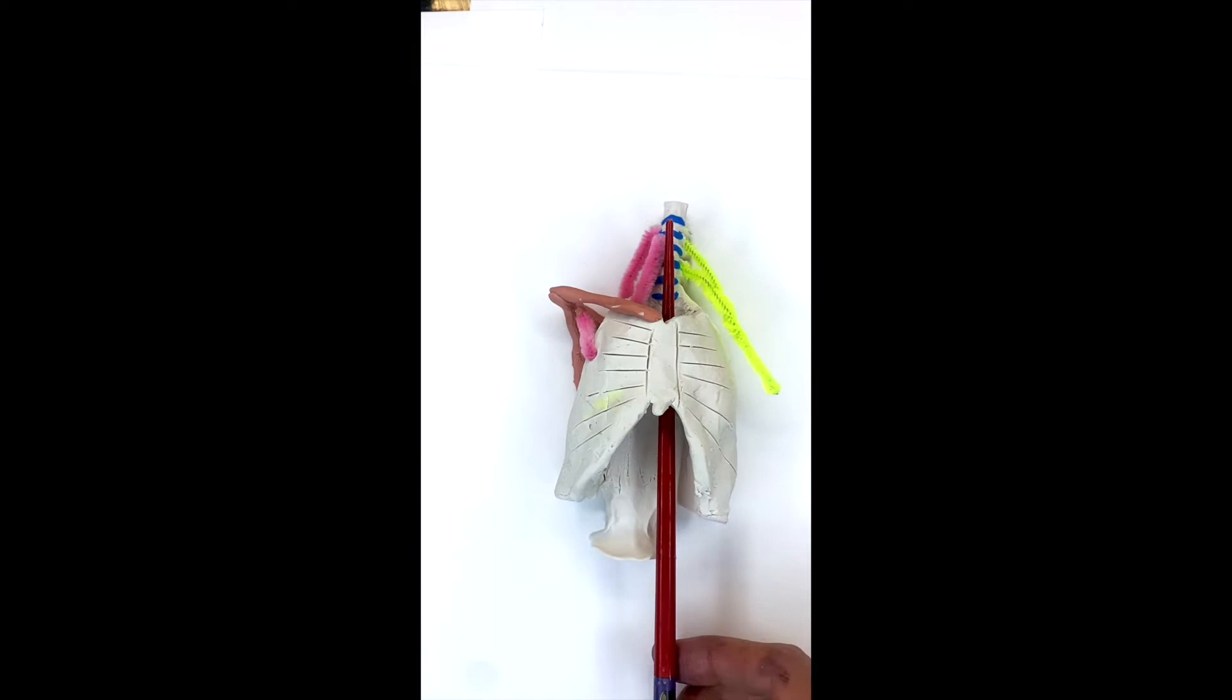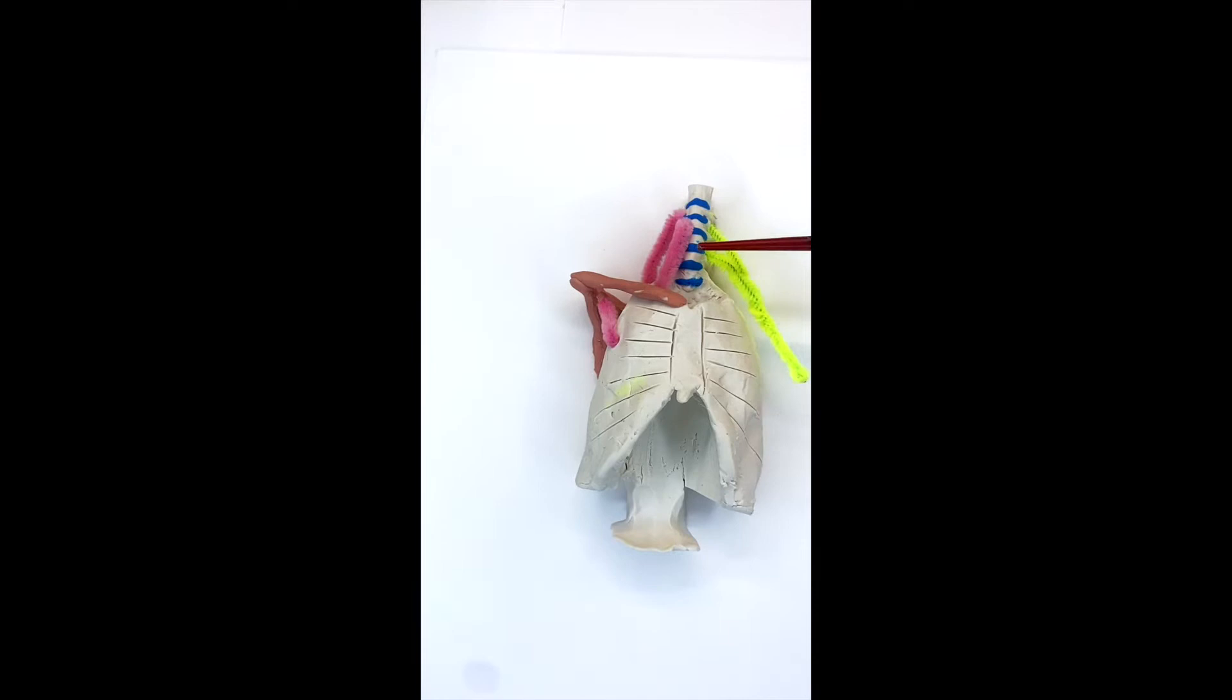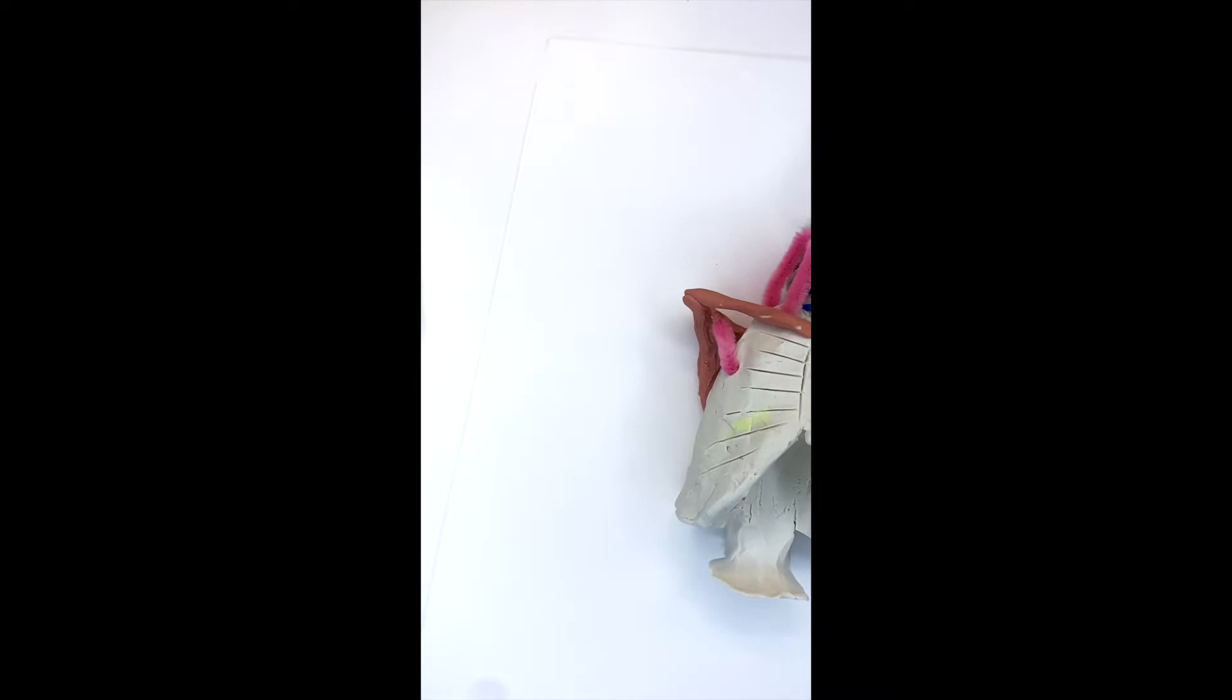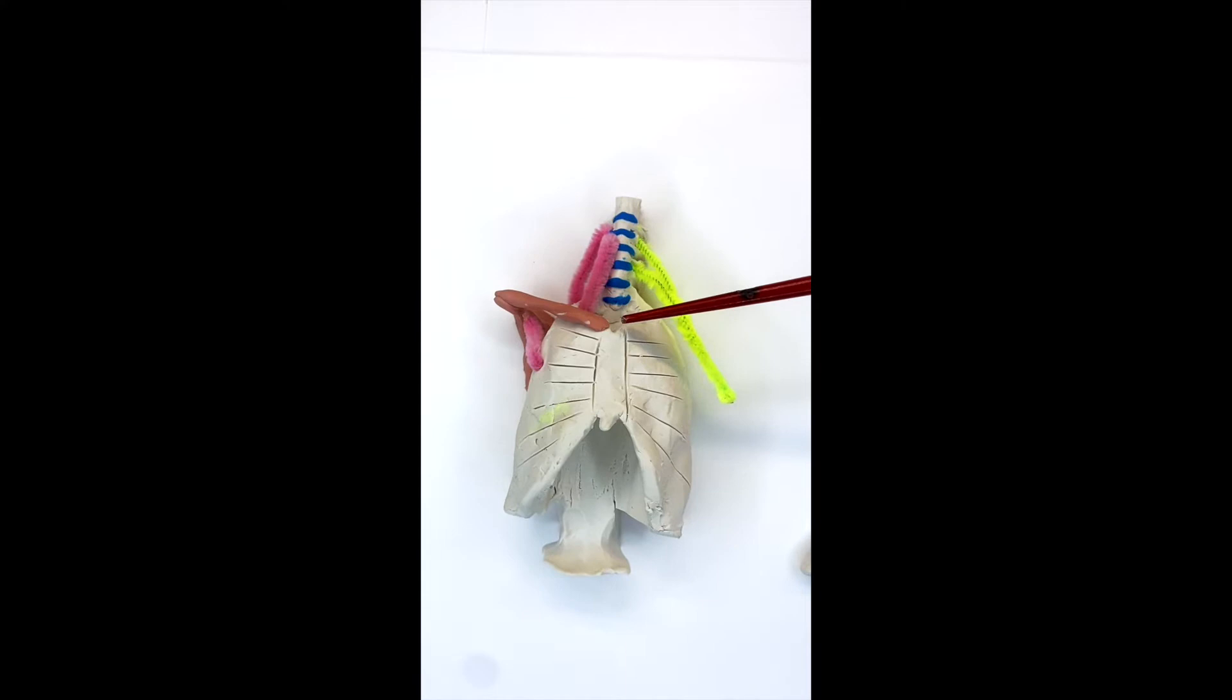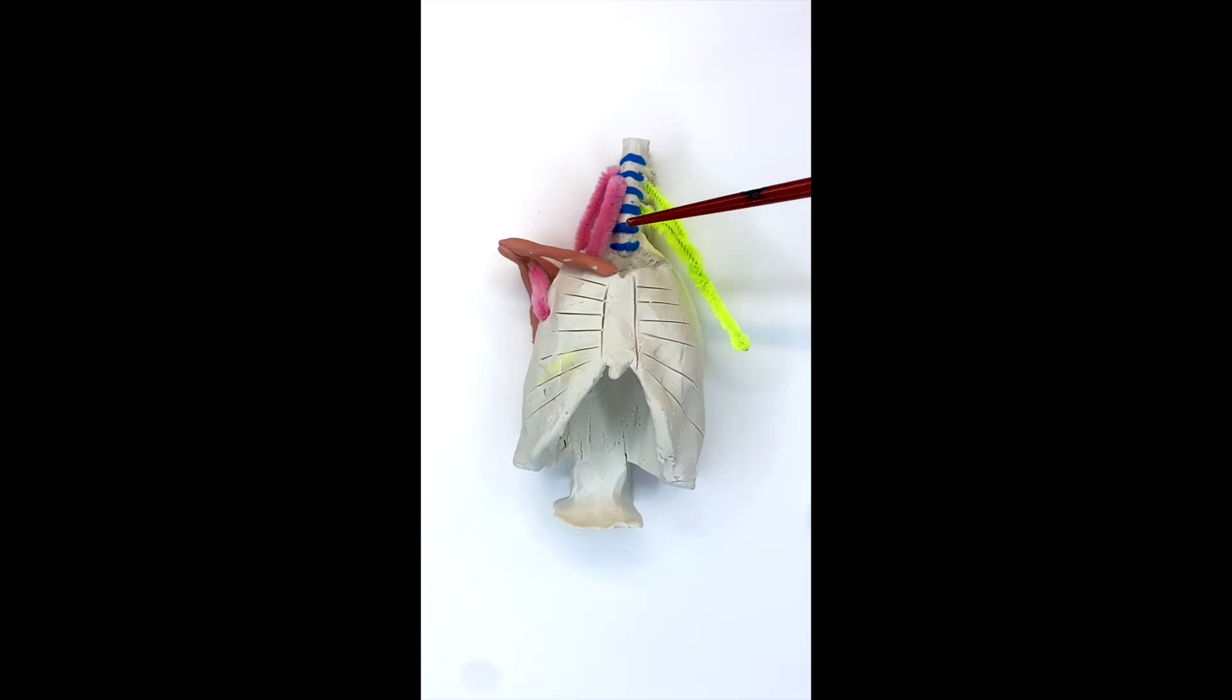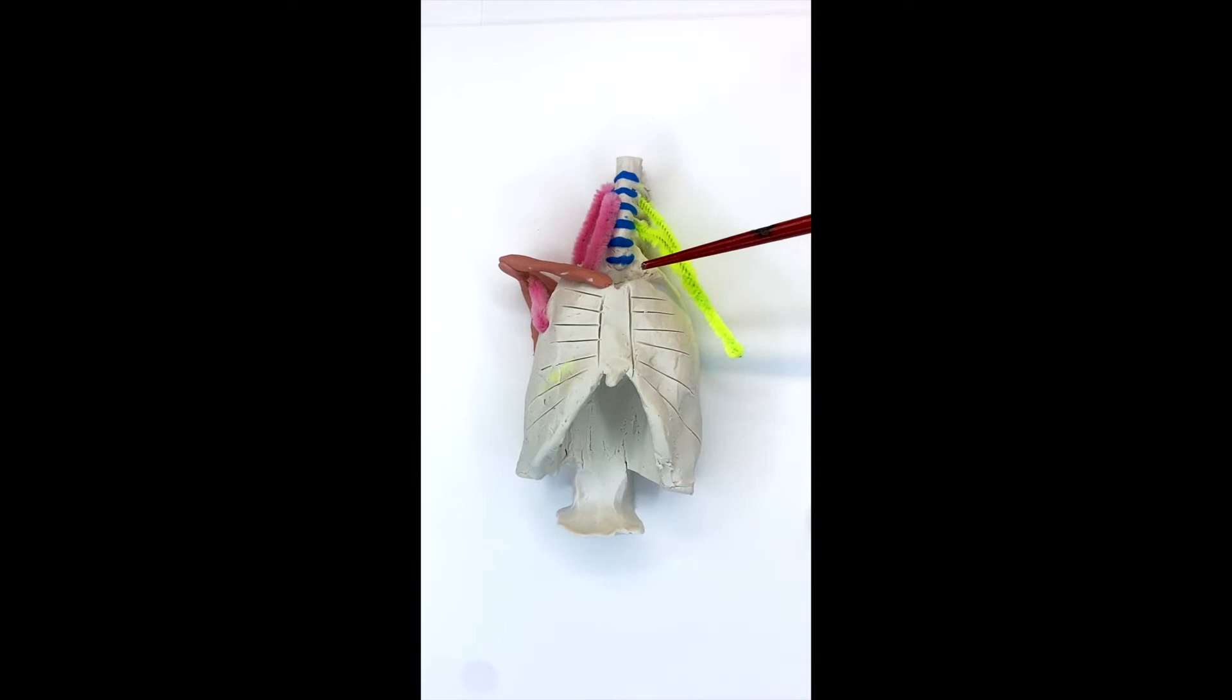So you have the sternum, and then the ribs, and then the spine is down through here. And this top part is technically the thoracic outlet. There's a big hole there. It doesn't look like a hole because it's filled up with muscles and also the trachea would be there and the esophagus behind the trachea and your thyroid gland. There's a bunch of stuff filling this space up.